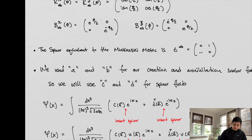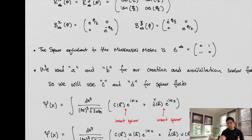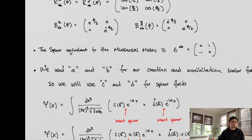Spinors also have a sort of equivalent to the Minkowski metric. Insofar as they transform in a unique way, there's also a metric between two spinors — a way to quantify the difference between two spinors. The metric we use in spinor space is analogous to the Minkowski metric in spacetime, but it lives in the spinor space.